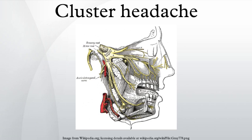Chronic CH occurs continuously without any remission periods between cycles. There may be high and low variation in cycles, meaning the frequency and severity of attacks may change without predictability for a period of time. The condition may change unpredictably from chronic to episodic and from episodic to chronic. Remission periods lasting for decades have been known to occur.